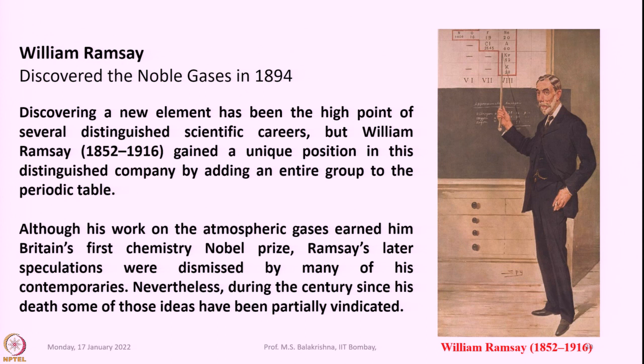That means the group 18 elements — all inert gases — were discovered because of very painstaking systematic work carried out by William Ramsey. Although his work on the atmospheric gases earned him Britain's first chemistry Nobel Prize, Ramsey's later speculations were dismissed by many of his contemporaries. Nevertheless, during the century since his death some of those ideas have been partially vindicated.